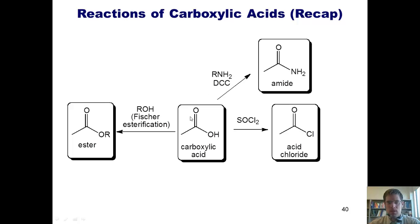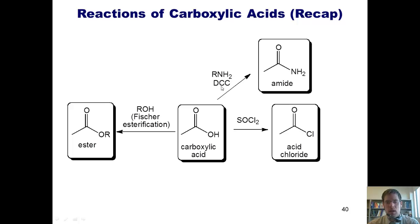Here are the reactions of carboxylic acids. If I treat them with an alcohol and a catalytic acid, I can form an ester — this process is called Fischer esterification. I can convert the hydroxyl group into a chlorine using thionyl chloride, or SOCl2. And I can replace the OH with an amine group, thereby forming an amide by treatment with various amines of choice using DCC. I'm not going to require you to know the mechanism of that, but DCC helps convert the OH into a better leaving group.